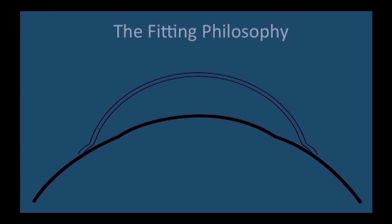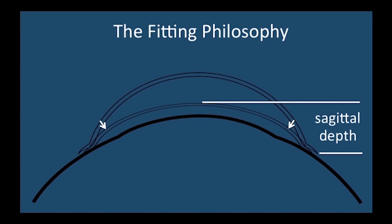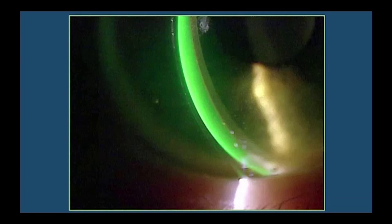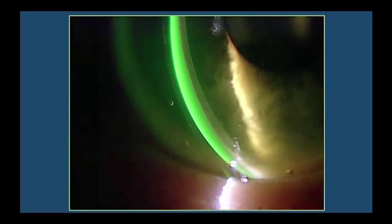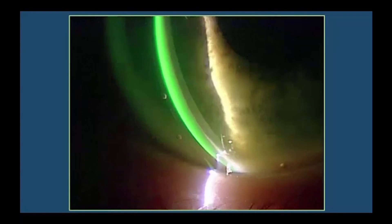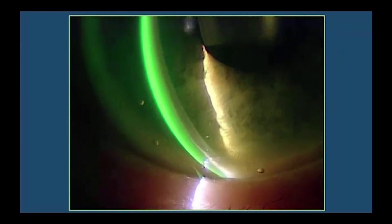Flattening the limbal transition zone of the lens would decrease the clearance of the lens at the limbus. Flattening this curve also decreases the sagittal depth and thus the overall clearance of the lens over the cornea. A reason that a lens would require flattening the limbal transition zone is if the lens has excessive clearance over the central portion of the cornea or the limbus. The following clinical video shows excessive central clearance. Flattening the limbal transition zone of this lens decreases the central clearance.